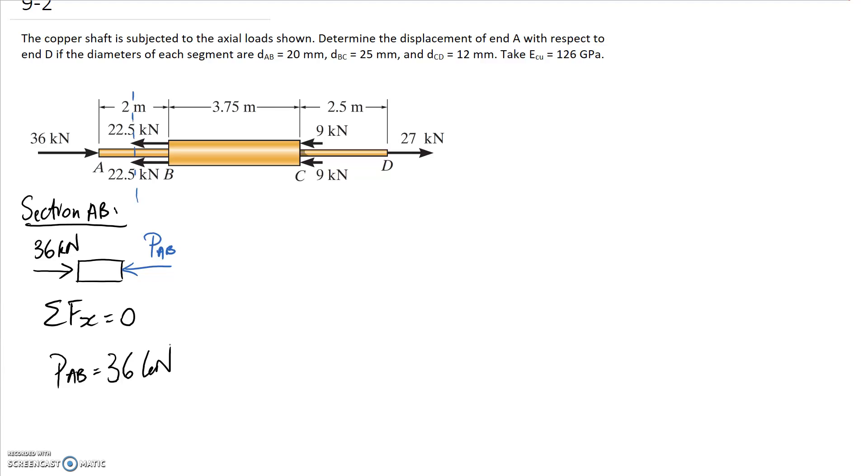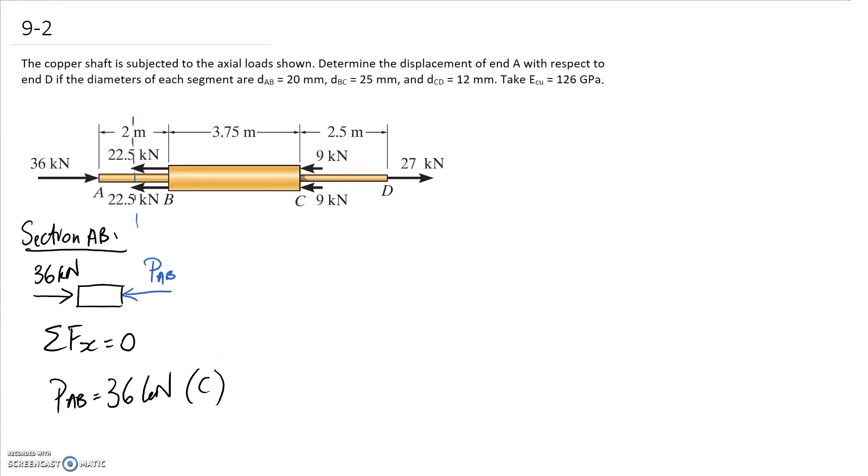So the other thing we need to think about is whether this internal force is causing tension or compression through that part of the member and we can see that PAB is pushing onto our member which is going to mean that it's in compression and this section here is going to try and get smaller in its length. So that's the first one sorted.